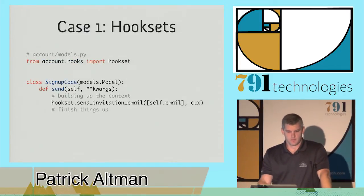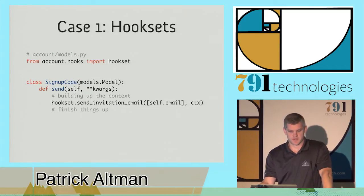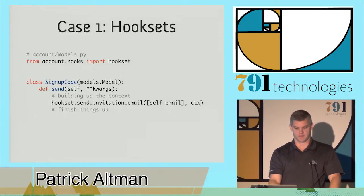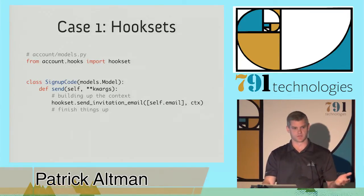Here in the models of Django user accounts, you can see in the signup model, we have a method called send. There used to be a block of your typical send mail code here. And that was replaced with this hook set method, send invitation email. And that's what allows us to override how the email is sent. So for the client, we ended up just making API calls and replacing the default hook set.